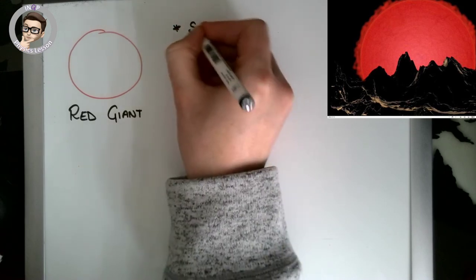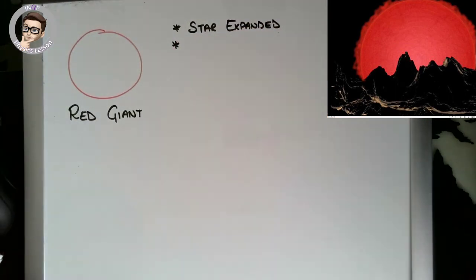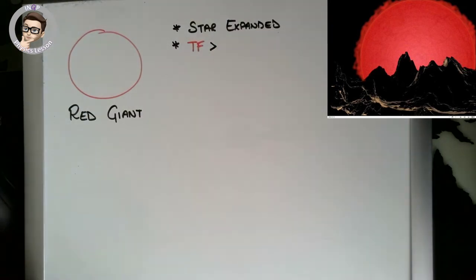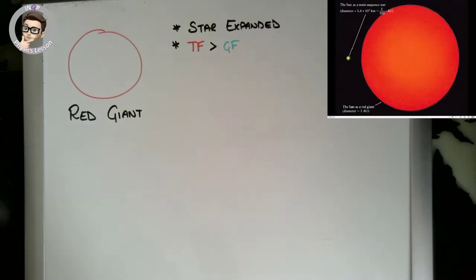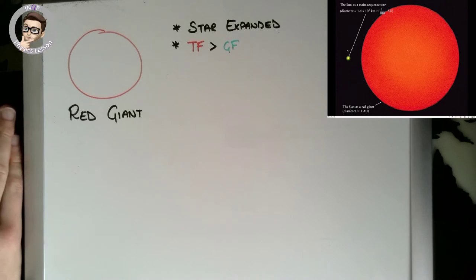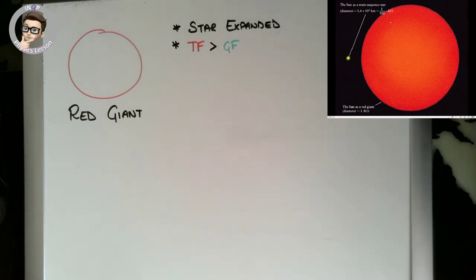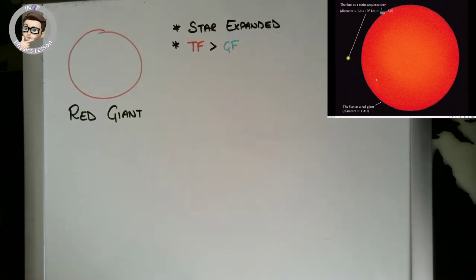The star has expanded because the thermal force is greater than the gravitational force, which means it expands outwards. On a scale diagram, the sun as a main sequence star has a diameter of about 1.4 × 10⁶ km — about 1/100th of an astronomical unit. As a red giant, the sun would be 100 times bigger, so it's expanded massively.